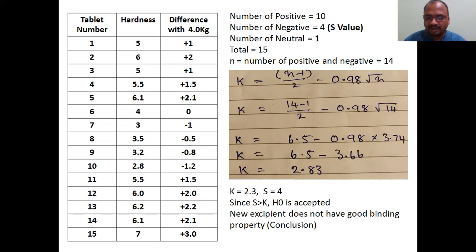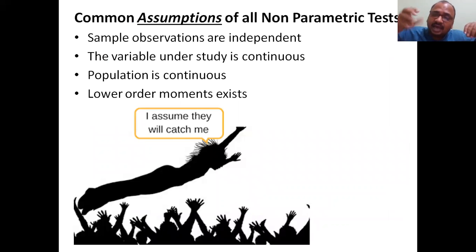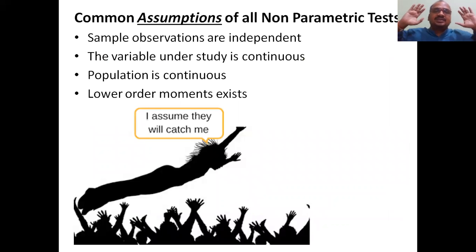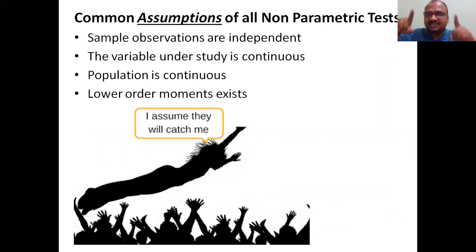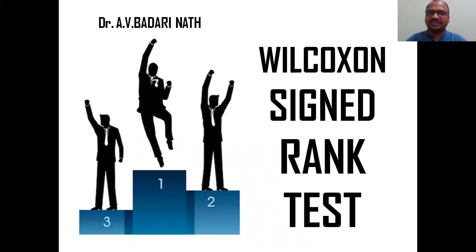These are common assumptions for all non-parametric tests — write these in the examination for any non-parametric test: sample observations are independent, the variable under study is continuous, the population is continuous, and lower order moments exist.